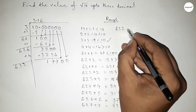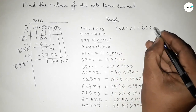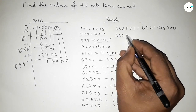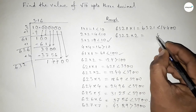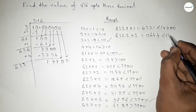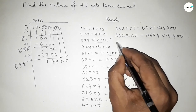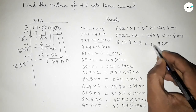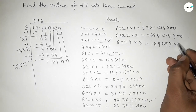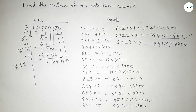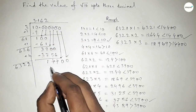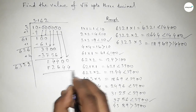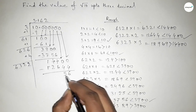Similarly, what should we put beside 632? If you put 1 and multiply by 1, that is less than 14400. If you put 2 and multiply by 2, that is also less than 14400. If you put 3 and multiply by 3, also less than 14400. So we put 2 here — 6322 times 2 equals 12644. Subtracting gives 1756.